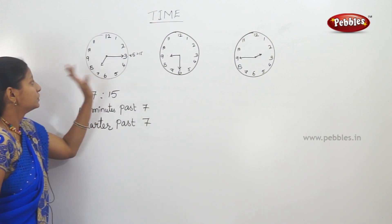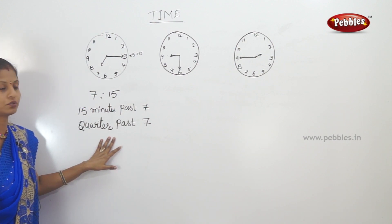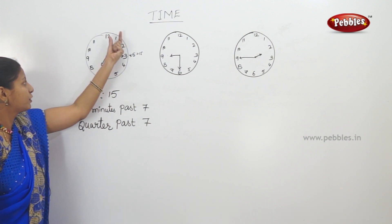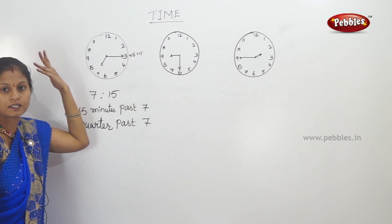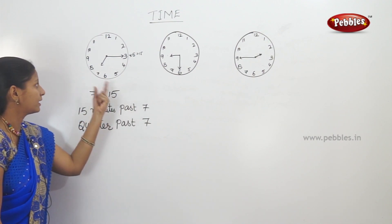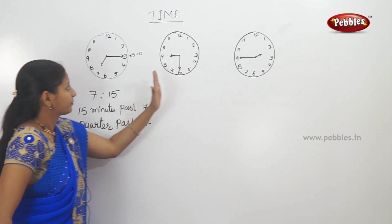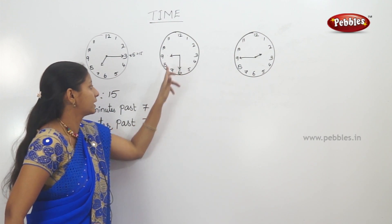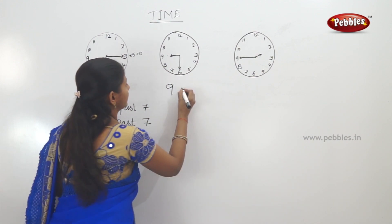Okay. Long hand is 4. Quarter past 7. Long hand is 3 — those on the left. So 15 minutes after 5, 5 minutes after 7 will be done.